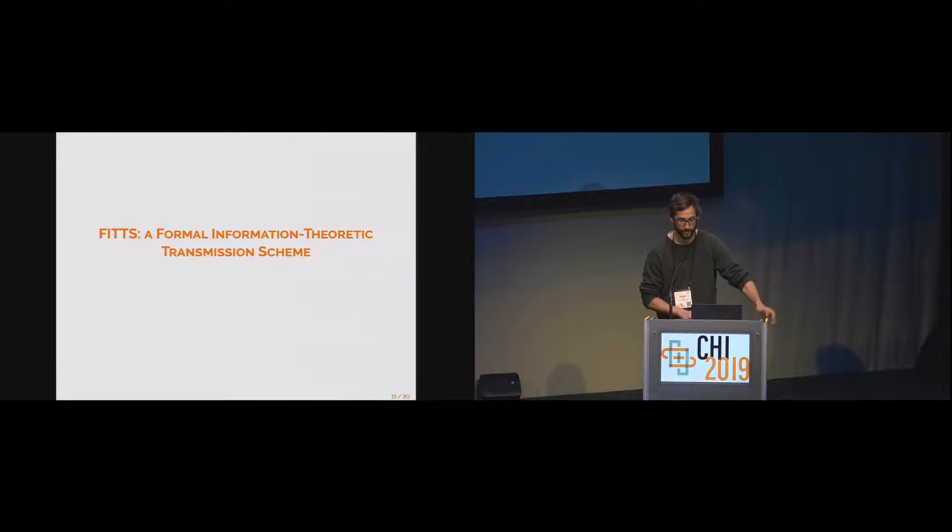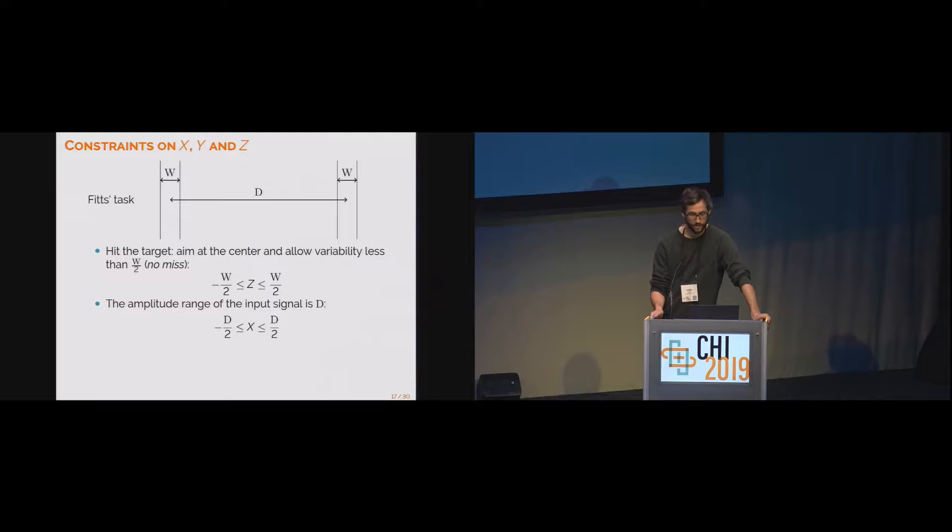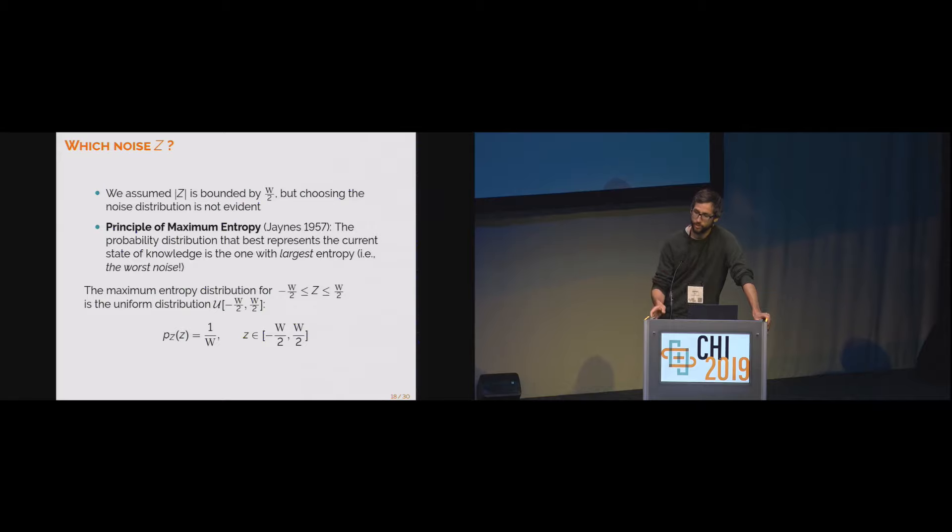This is the name of the model: a formal information theoretic transmission scheme, FITTS. The first abstract model is very simple. The user has the intention of aiming towards the target, and this intention is mapped into a signal that's sent over a noisy channel to the muscles which perform movement. As we've seen just before, everything in this work relies on the channel model. What we're going to do is integrate the task constraints in the channel model. If we look at the task, when we have to hit a target, we're going to aim at the center of the target. Then we allow a variability that's the size of the target, so this gives the first constraint on noise. The fact that the targets are separated by distance D gives the second constraint on the input. If we take these two constraints together, this gives the third constraint on the output.